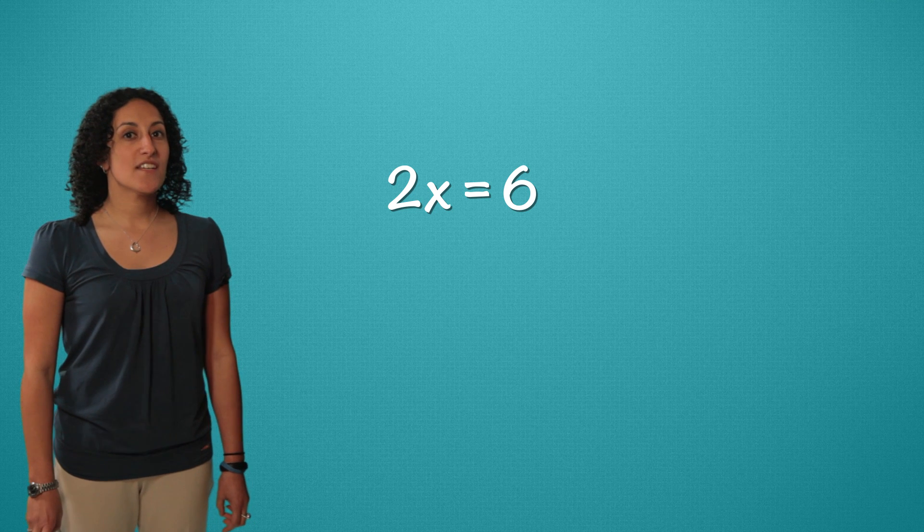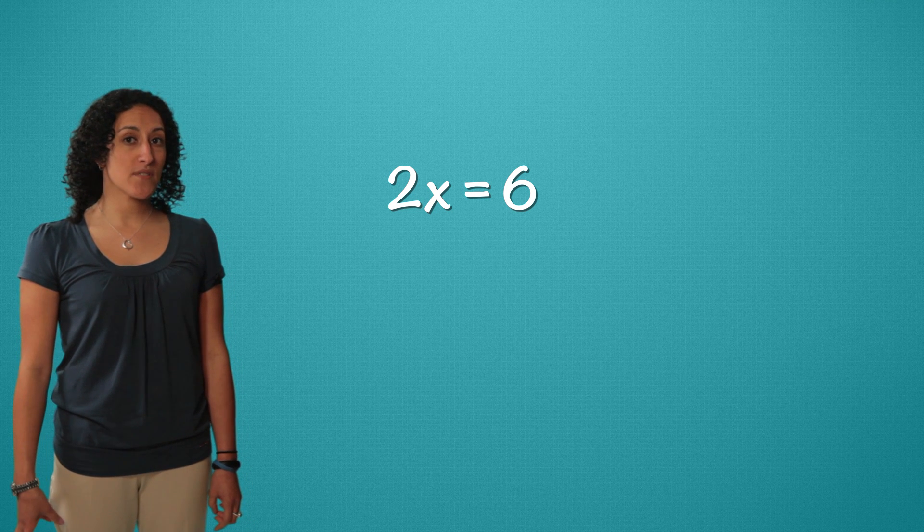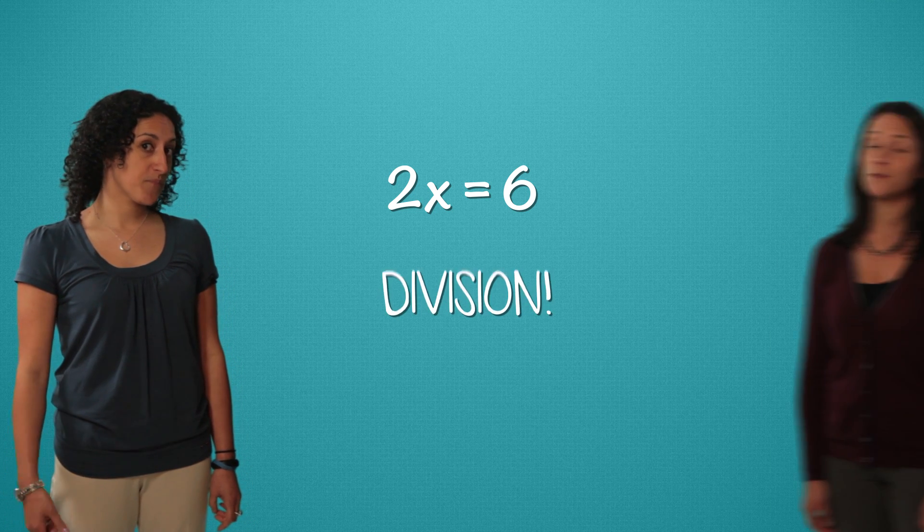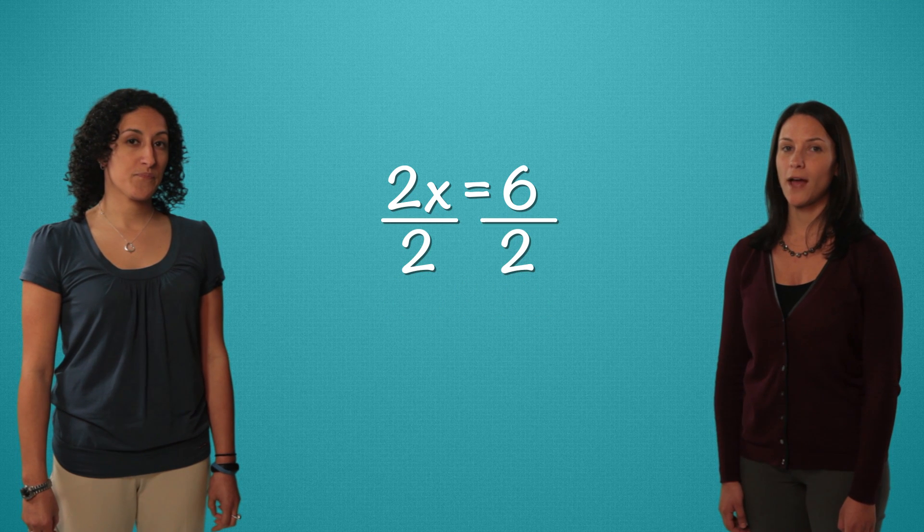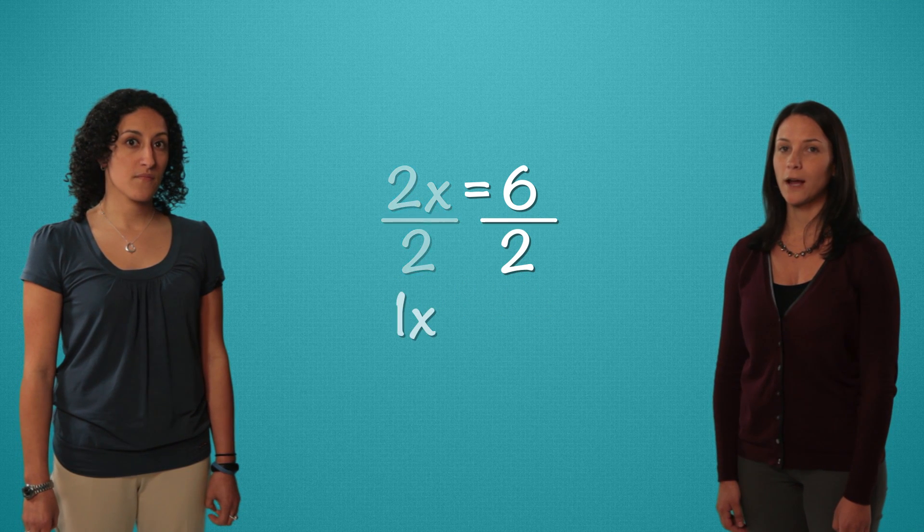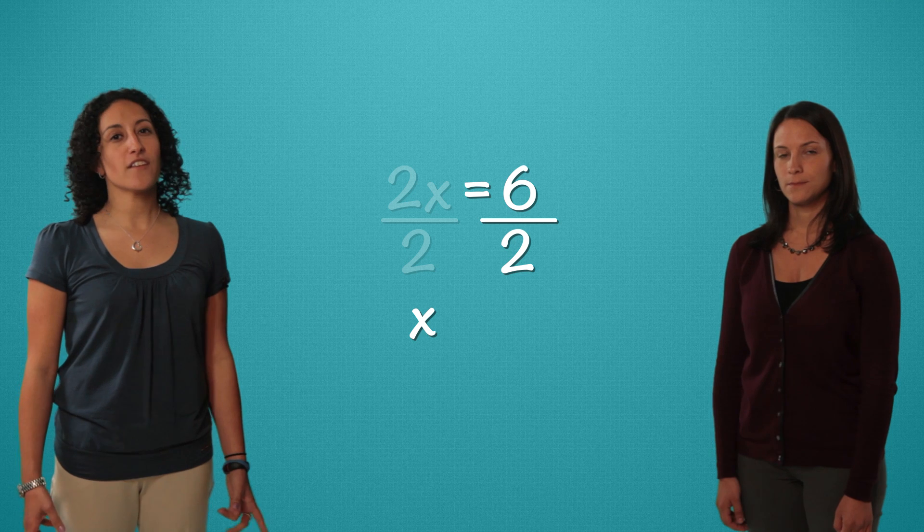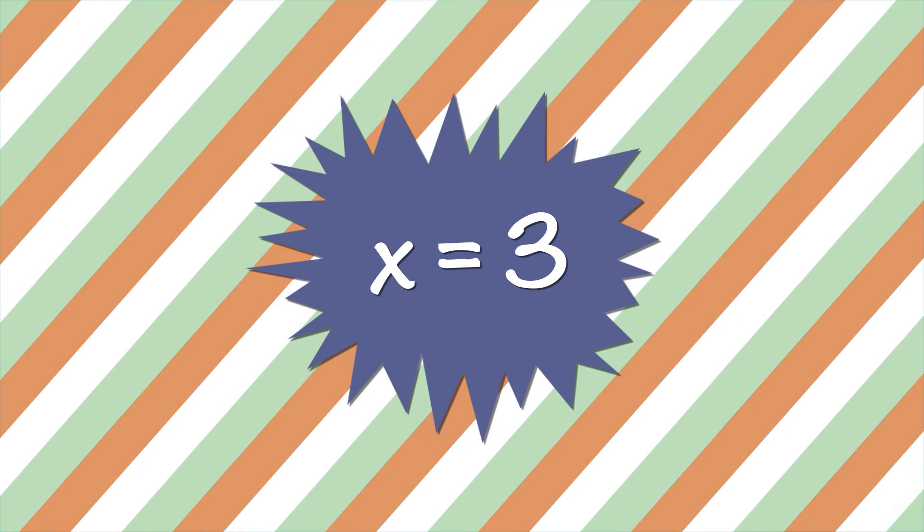Now we want our x alone. This is 2 times x, and the opposite of multiplication is division. Divide by 2 on both sides. 2x divided by 2 is 1x, or just x. And that leaves us with 6 divided by 2, which is 3. x equals 3.